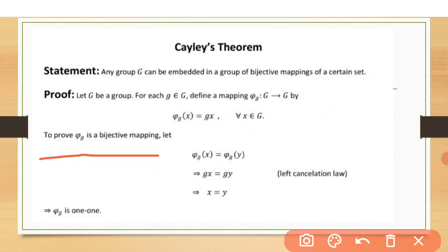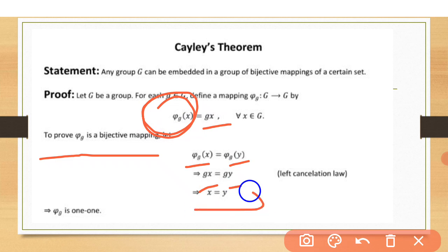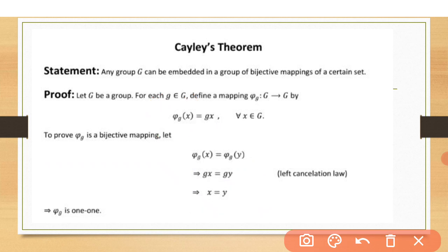To prove phi_g is a bijective mapping: suppose x and y belong to G and phi_g(x) = phi_g(y). Since phi_g(x) = gx and phi_g(y) = gy, by the cancellation law, x = y, so phi_g is one-to-one. For onto: for every element in G, the image of the inverse of x also belongs to G, so phi_g is also onto. Therefore phi_g is a bijective mapping.